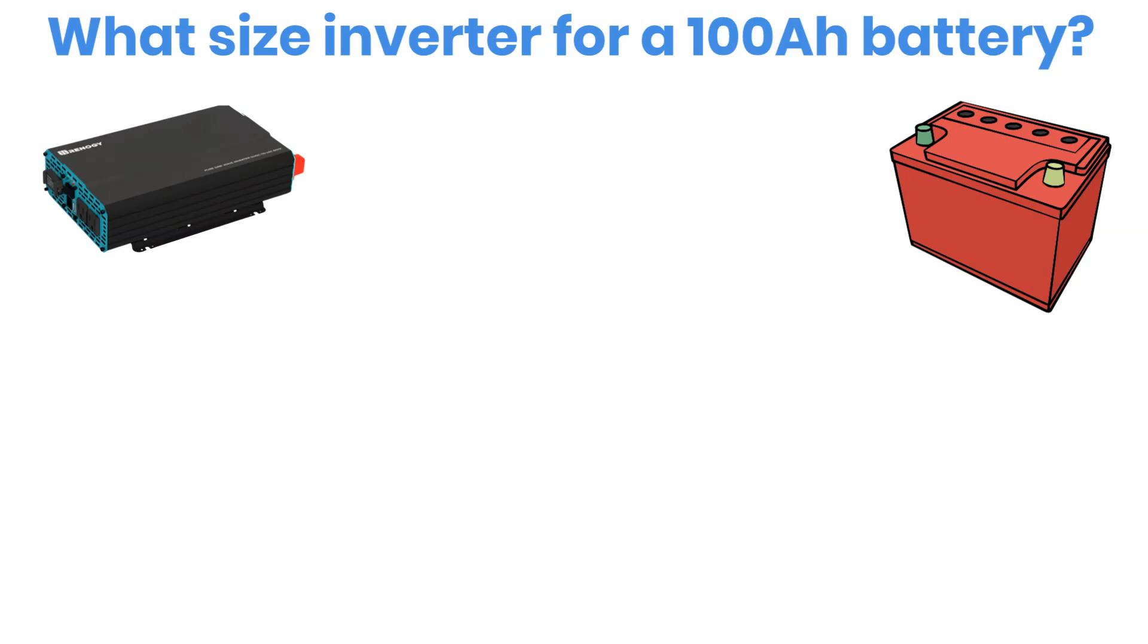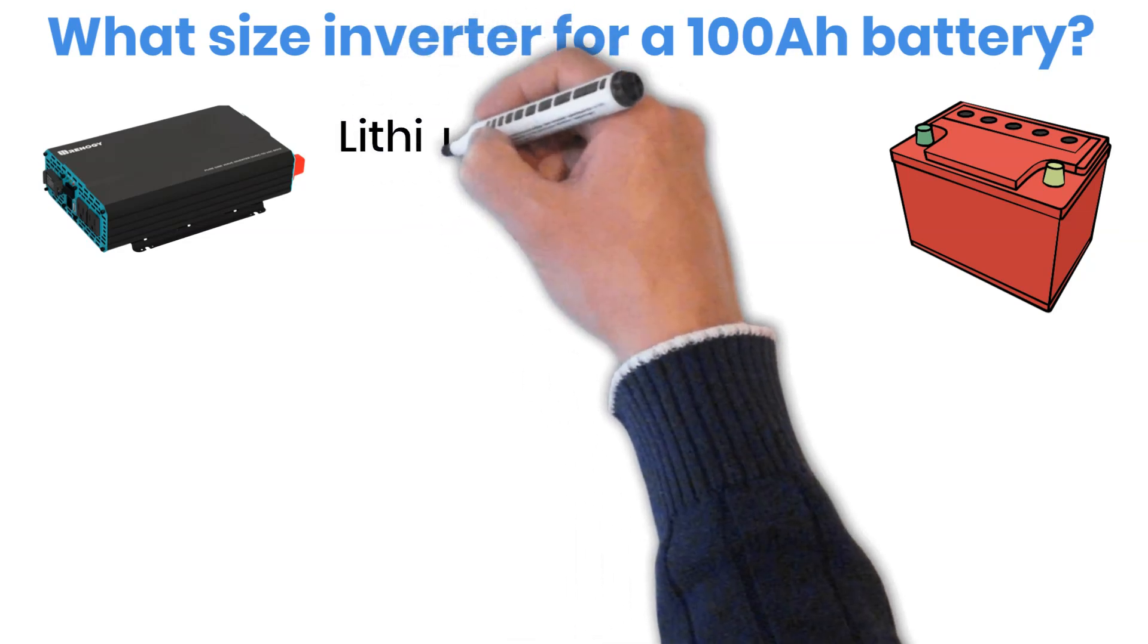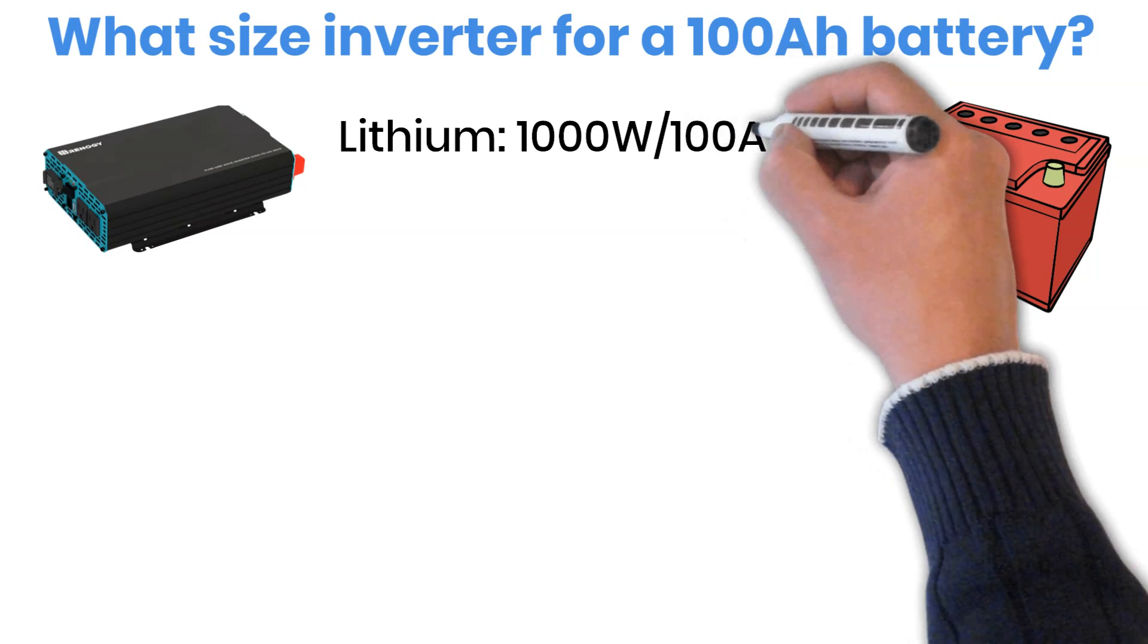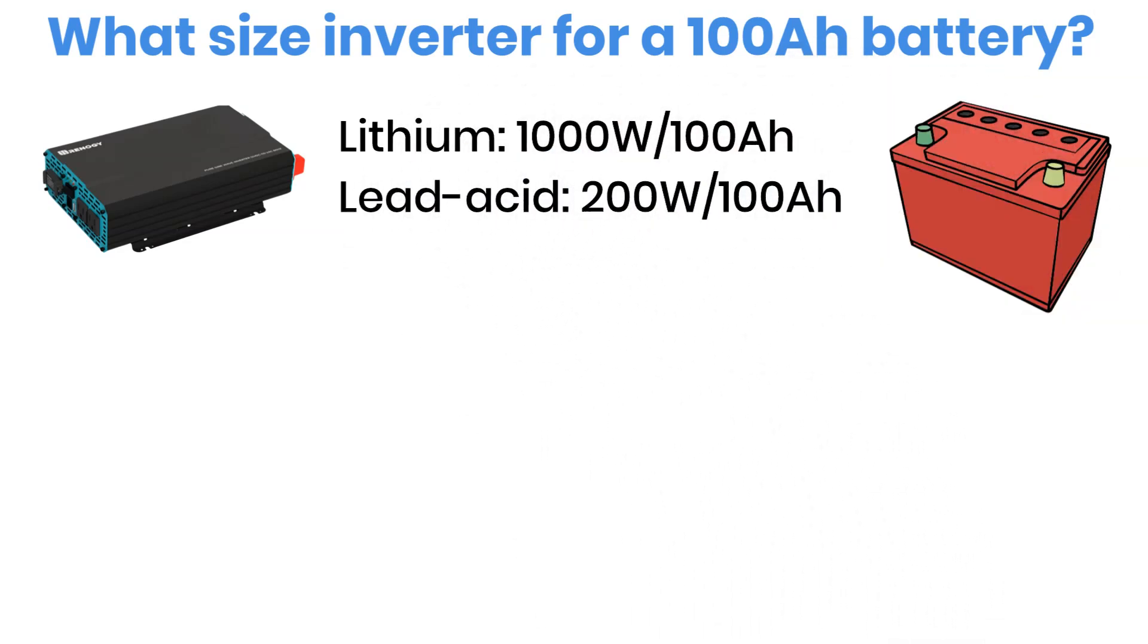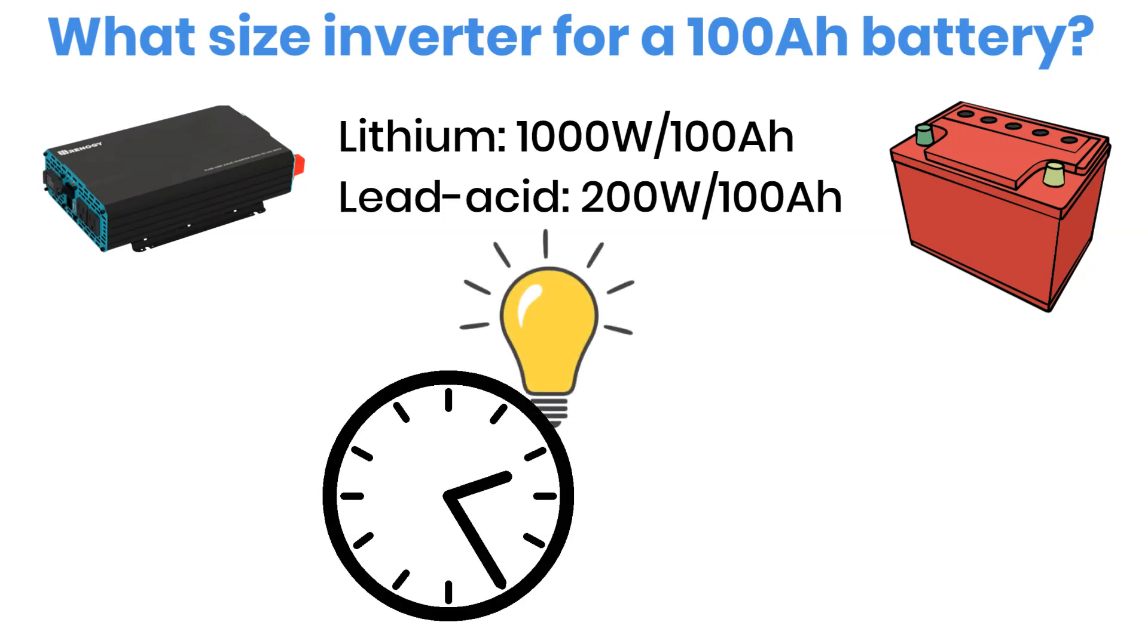If your battery is lithium, I'll suggest sticking around 1000 watts maximum. And if you're using lead acid, then about 200 watts per 100 amp hour battery is a safe range. In a few minutes, you'll understand exactly why those numbers make sense.